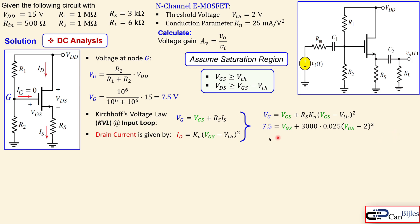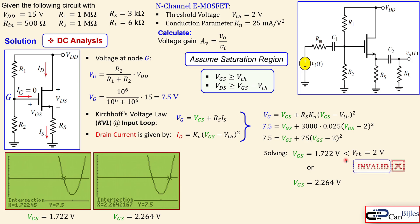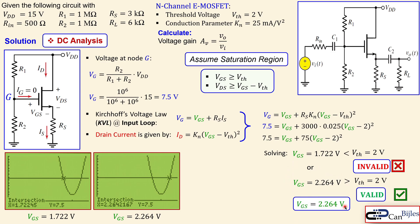We can solve this using hand calculation or a graphing calculator solver. We get two intersection solutions: 1.722 volts and 2.264 volts. Checking the saturation condition, VGS must be greater than or equal to the threshold of 2 volts. The solution of 1.722 volts is mathematically correct but physically invalid for this circuit. The solution of 2.264 volts exceeds the threshold, so this is the valid VGS.